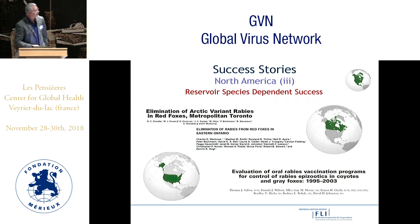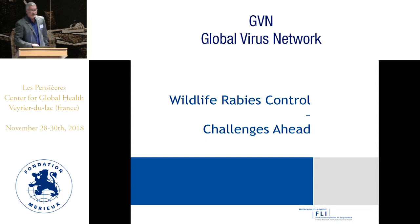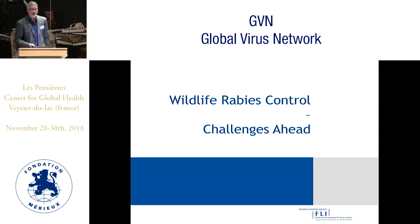There are also success stories in North America, though with more species-dependent results. Using oral vaccination, Canadian colleagues were able to eliminate Arctic variant rabies in red foxes from Ontario, and American colleagues were able to stop rabies in coyotes and grey foxes in the United States and eliminate these rabies virus variants at the animal source. So, mission accomplished — but what are the challenges ahead?